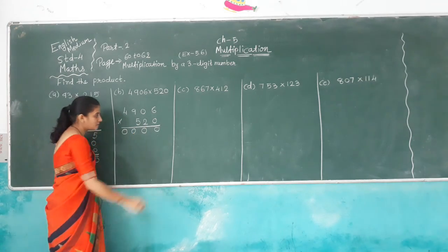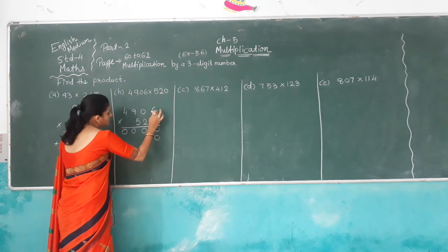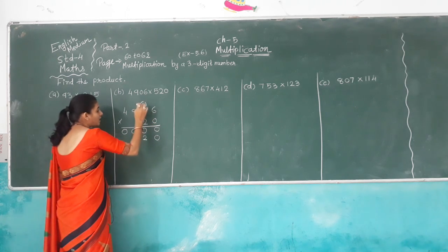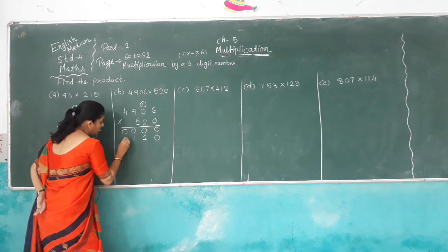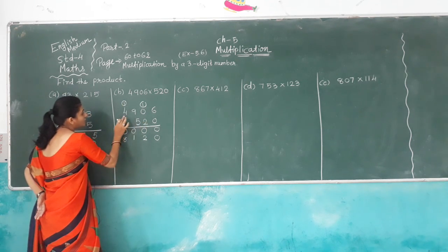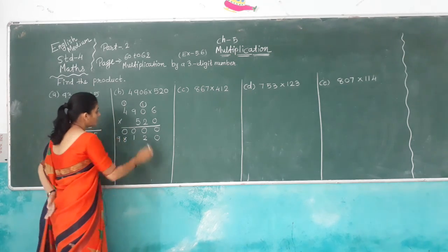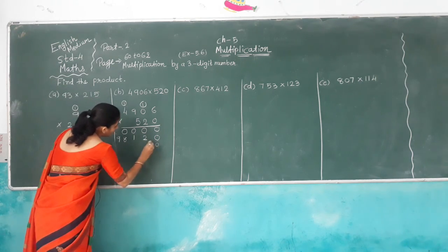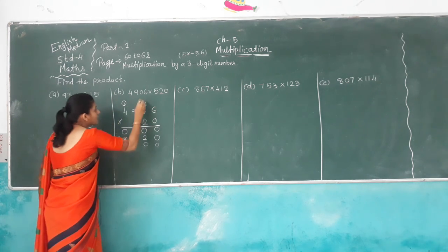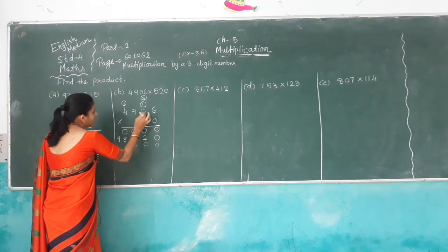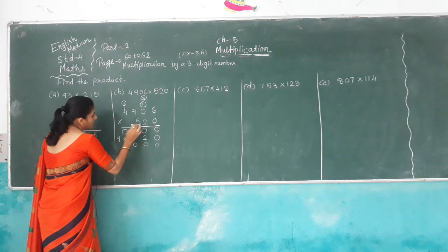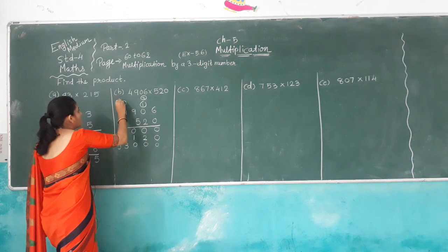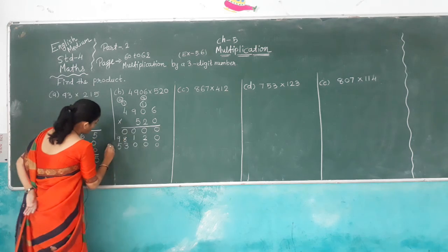Now we count the tens place — keep 1, 0. 2 times 6 is 12, carry 1. 2 times 0 is 0, plus 1 is 1 — keep 1 down. 2 times 9 is 18, carry over 1. 2 times 4 is 8, plus 1 is 9. Now hundreds place — keep 2 zeros. 5 times 6 is 30, carry 3. 5 times 0 is 0, plus 3 is 3. 5 times 9 is 45, 5 times 9 is 45, carry over 4. 5 times 4 is 20, plus 4 is 24.